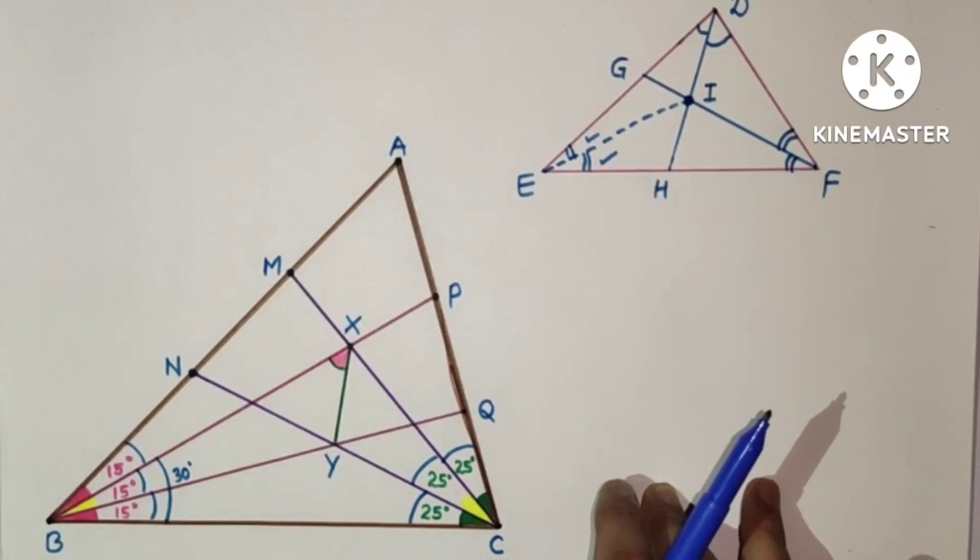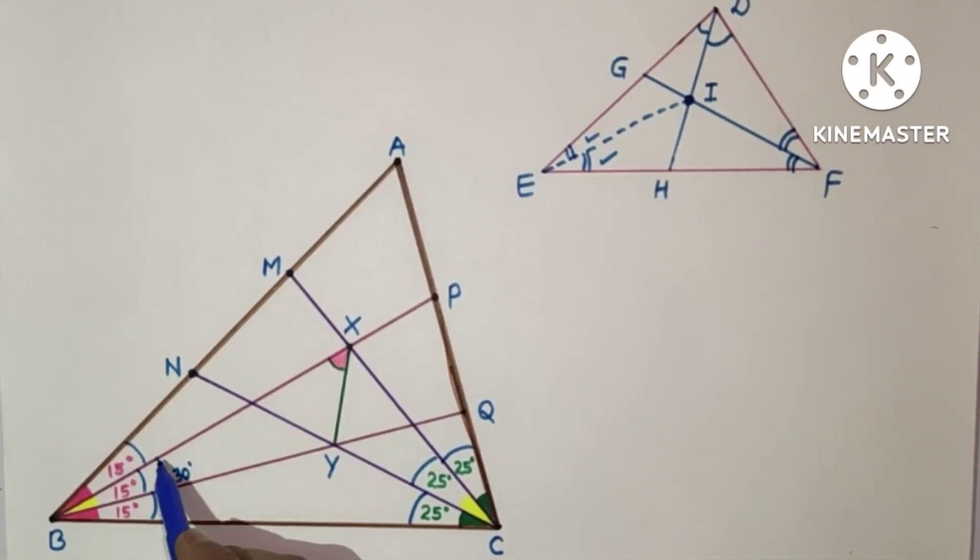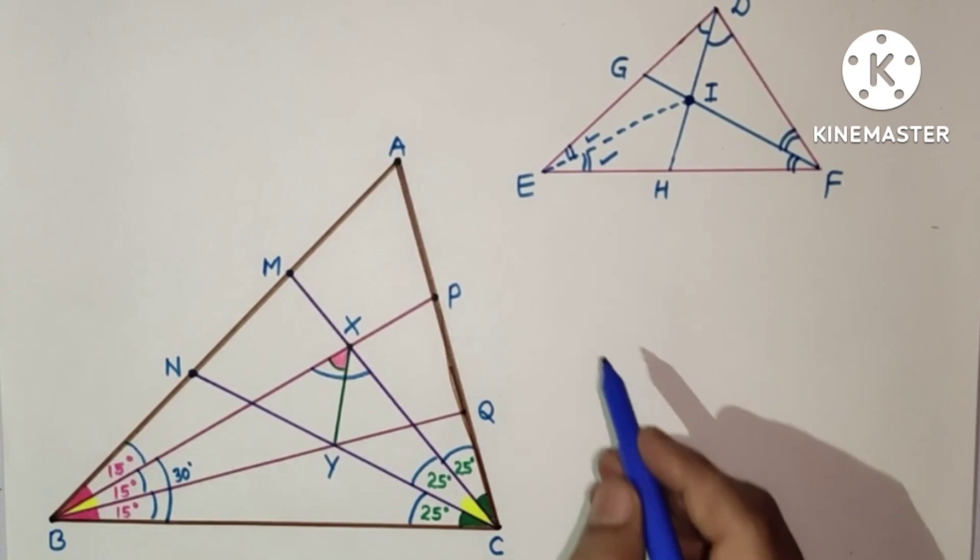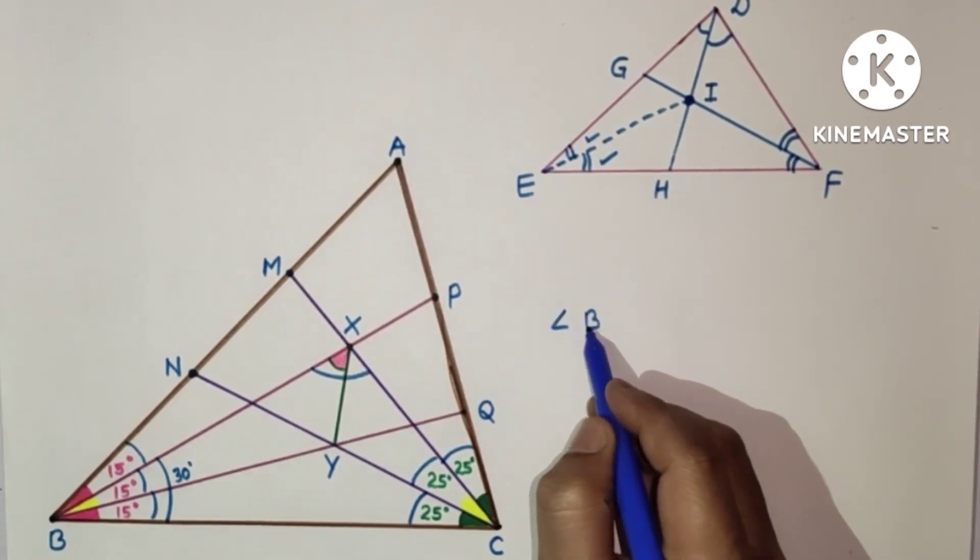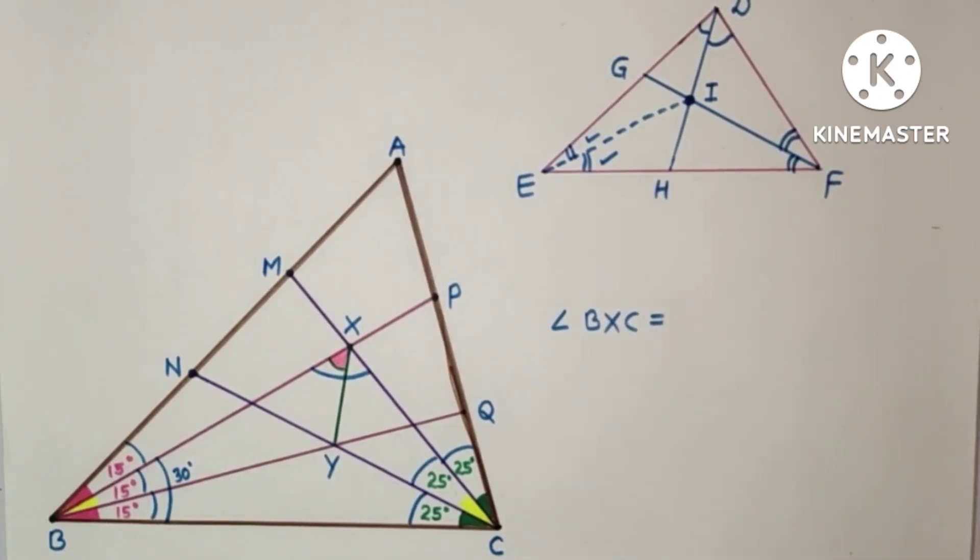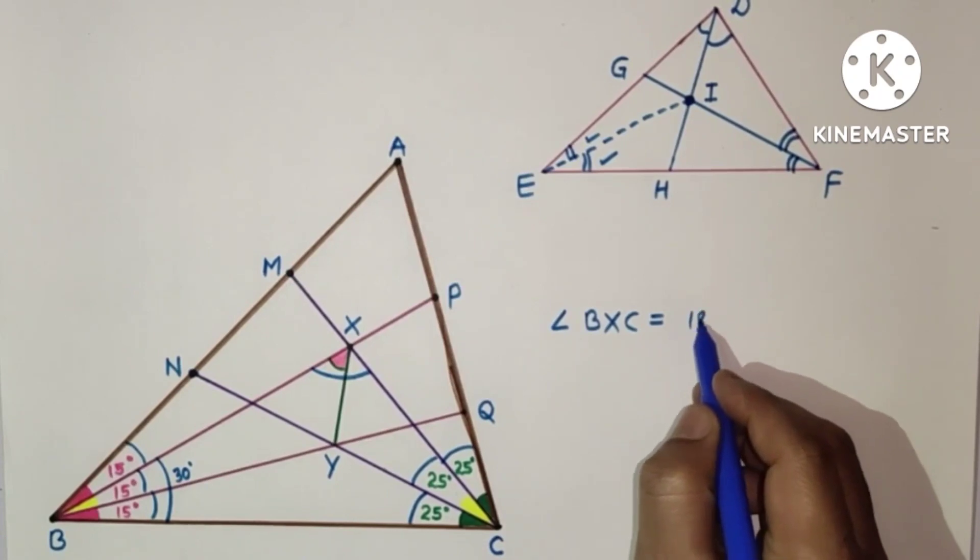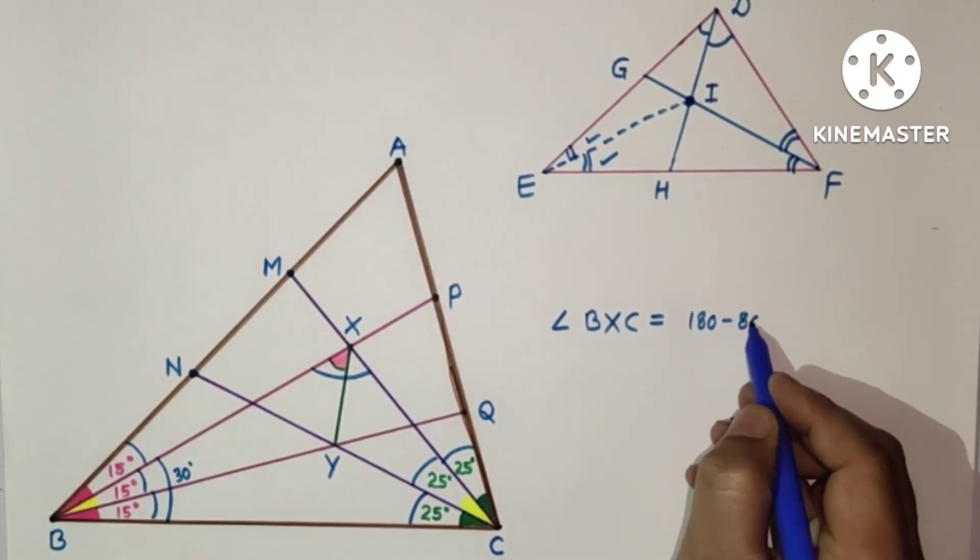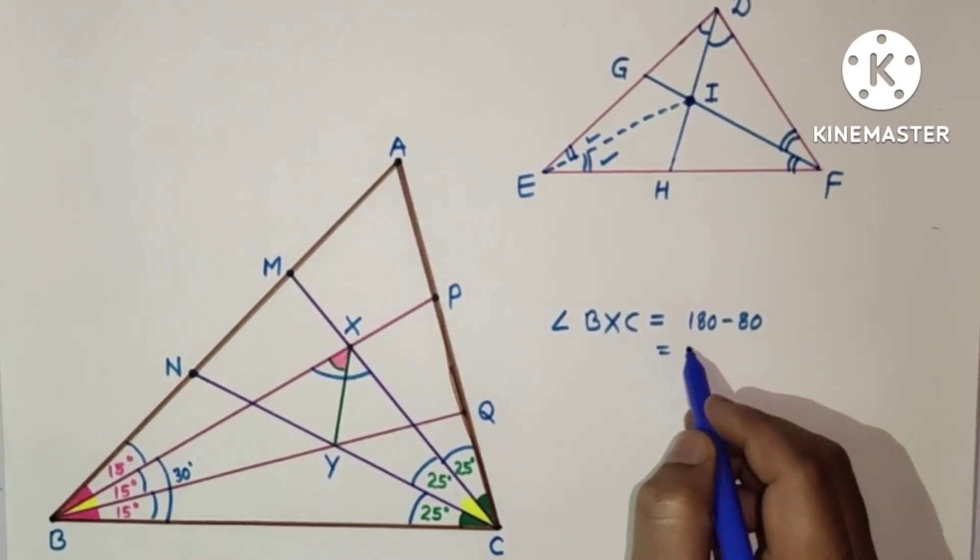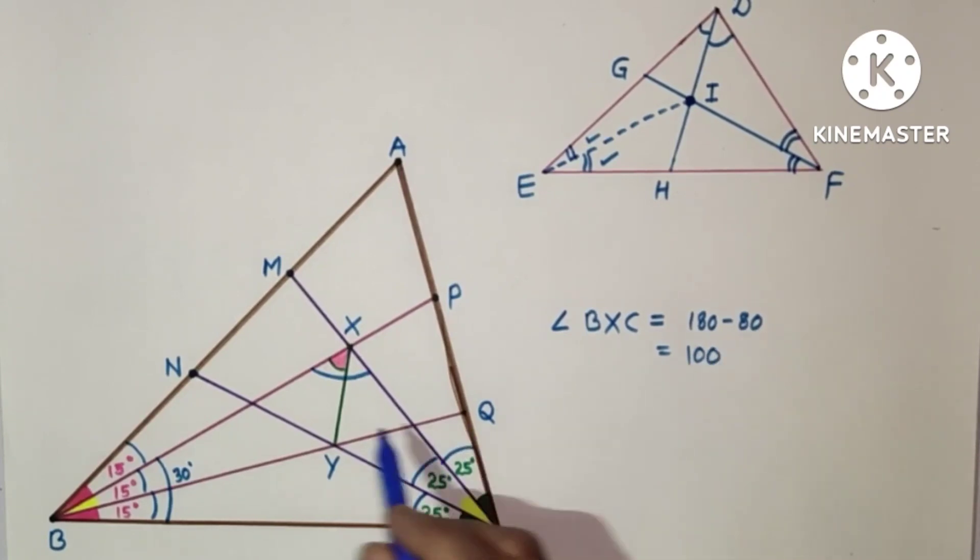Same thing is here. This is 30, this is 50, so the whole angle BXC, angle BXC is equal to 50 plus 30 is 80, 180 minus 80, that is equal to 100. So this BXC is equal to 100 degrees.